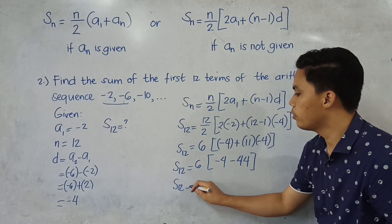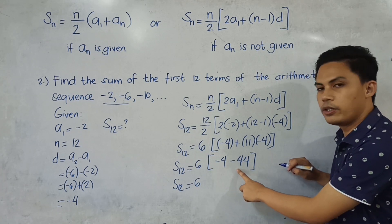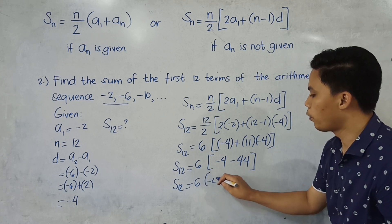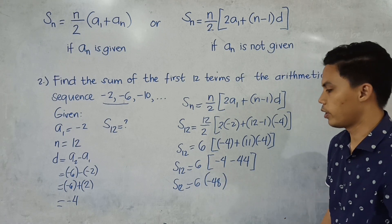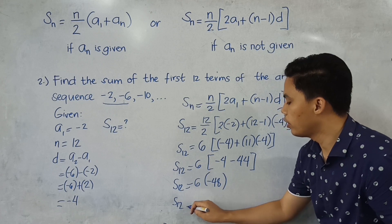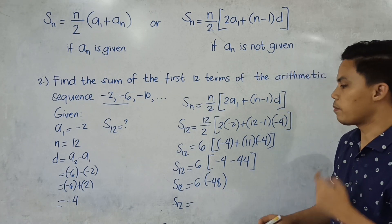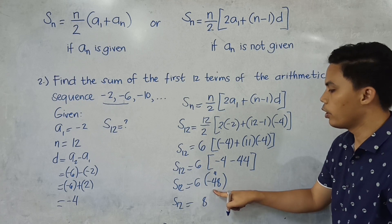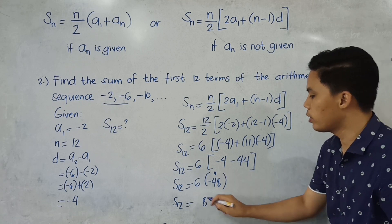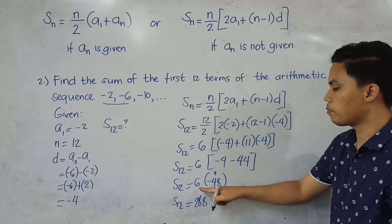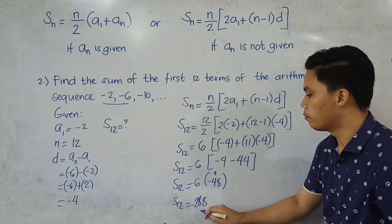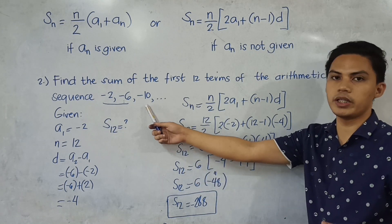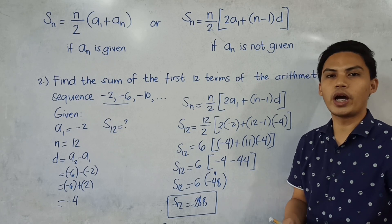Continuing: 6 times the quantity negative 4 plus negative 44. Since they are like signs, negative 4 minus 44 equals negative 48. Finally, 6 times negative 48: 6 times 8 is 48, 6 times 4 is 24, plus 4 is 28, giving 288. Since positive times negative gives a negative result, the sum of the first 12 terms of the arithmetic sequence is equal to negative 288.